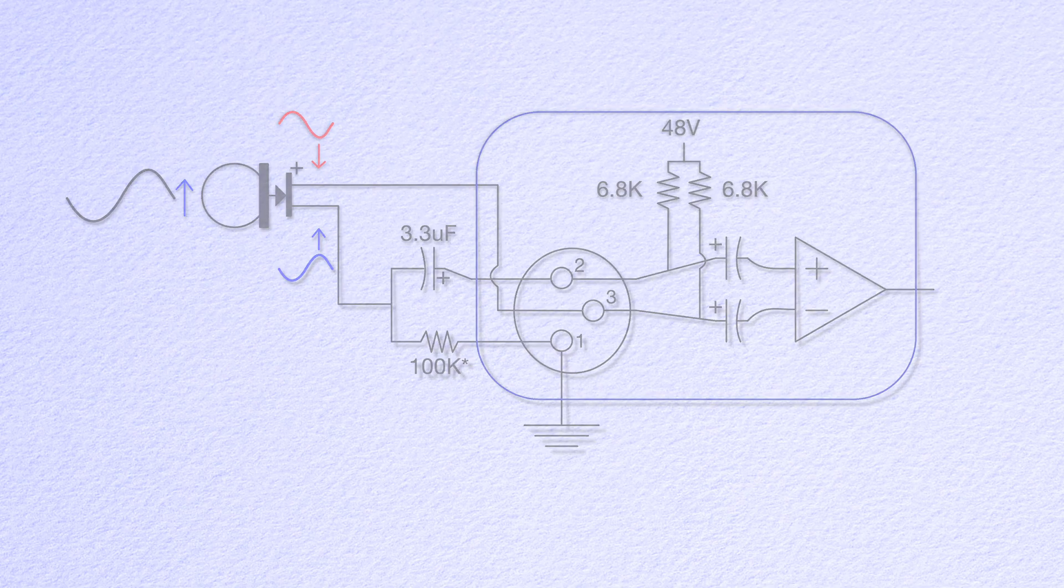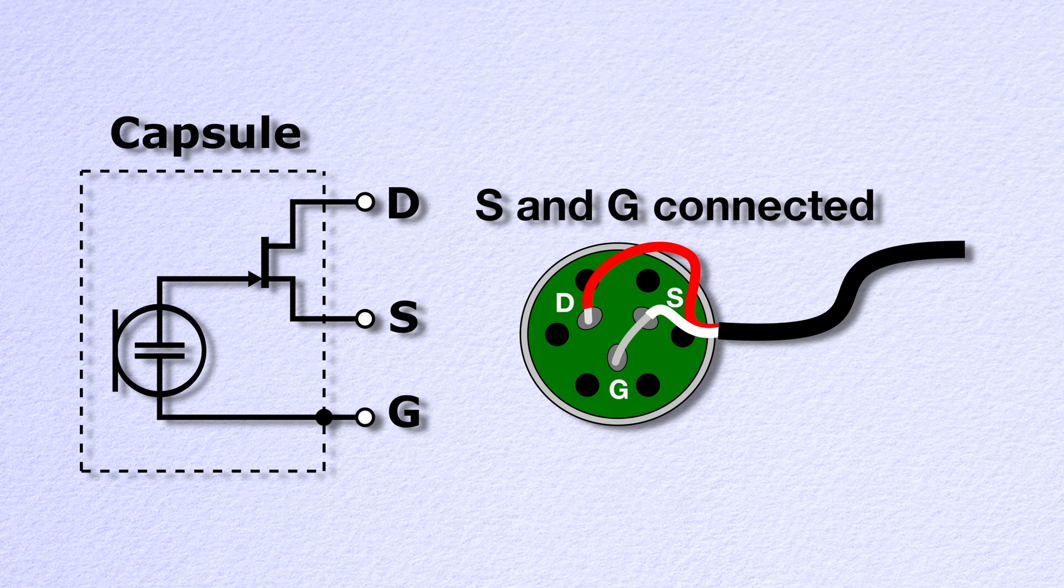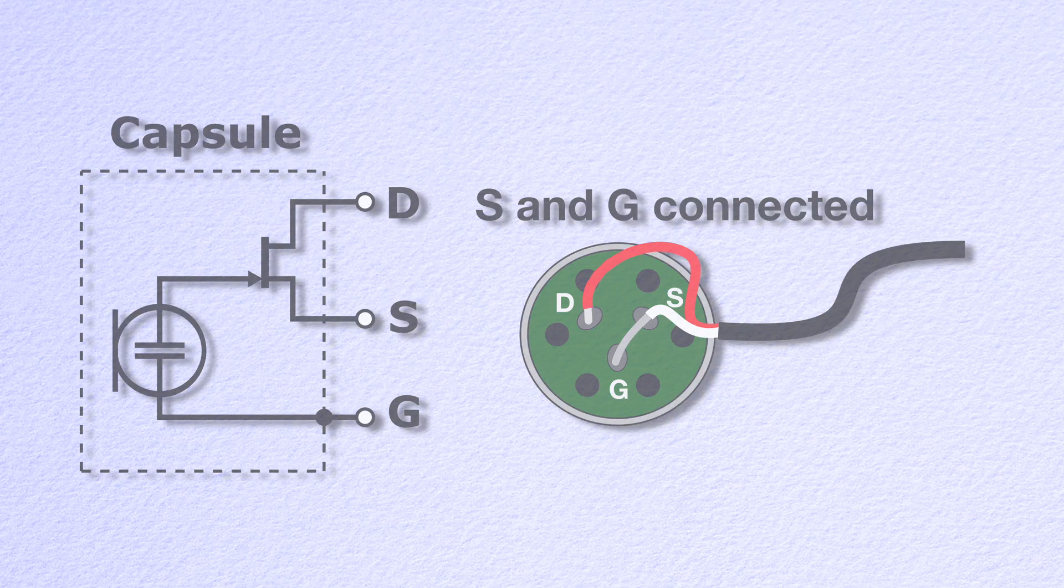The other thing we need to do to the mic capsule is make it a two-wire capsule versus a three-wire capsule. This is easily accomplished by connecting the source terminal to ground. We will do that as part of the build. Okay, let's build it.